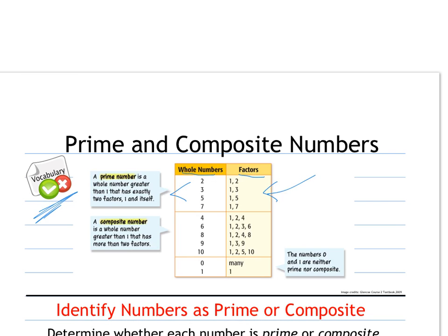Composite numbers, some examples are 4, 6, 8, 9, 10, because they have more than 2 factors, they go beyond 1 and itself. I can multiply 1 times 4, 2 times 2, and so on. These are all listed factors of those numbers.